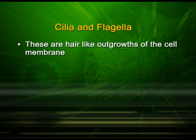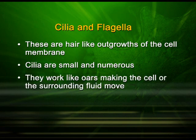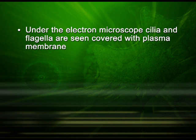The cilia and flagella are hair-like outgrowths of the cell membrane. Cilia are small and numerous; they work like oars, making the cell or the surrounding fluid move. Flagella are comparatively longer and fewer in number, and are also responsible for cell movement. Under the electron microscope, cilia and flagella are seen covered with a plasma membrane.